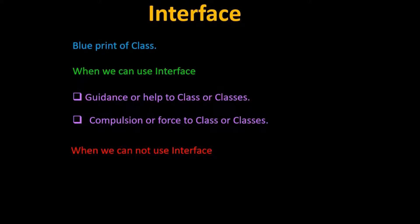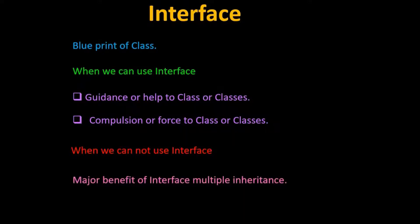We can implement that method in abstract class, so there would be no compulsion to implement it for classes which have inherited the abstract class. A major benefit of interface is multiple inheritance. If there is a need for multiple inheritance, then interface can be used, because a class cannot have multiple base classes.